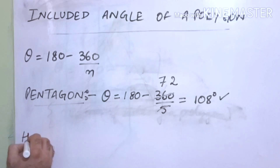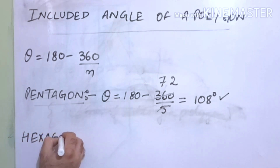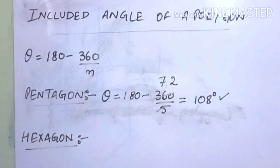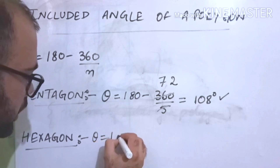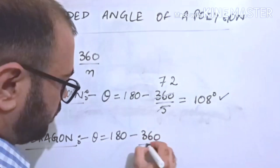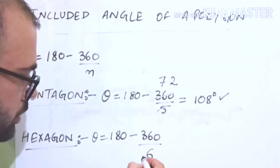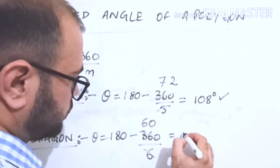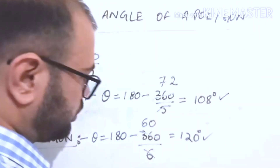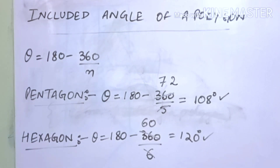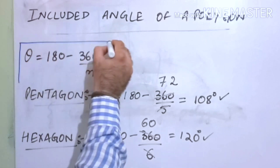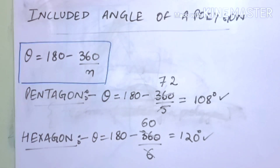Similarly, for a hexagon, theta equals 180 minus 360 divided by 6, which gives 120 degrees. So the included angle between adjacent sides of a hexagon is 120 degrees. You should know this formula — it is very important and comes under two-mark questions.